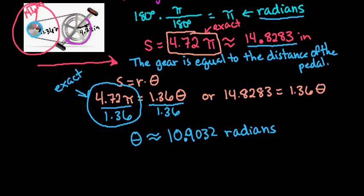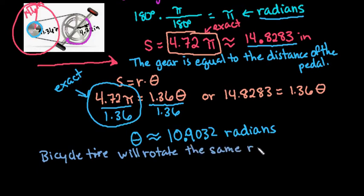Now what happens is since we have concentric circles, whatever angle this one rotates, the circle on the outside also rotates through the same angle measure. So the angle measure for the bicycle tire will rotate the same radians as the gear.